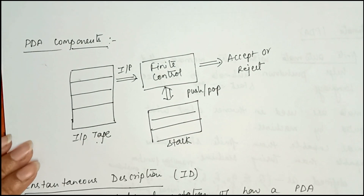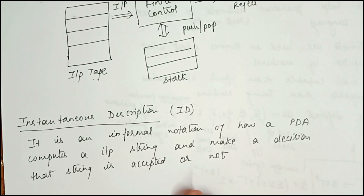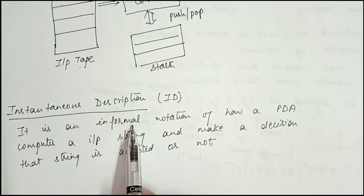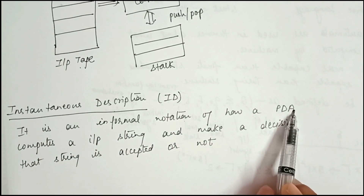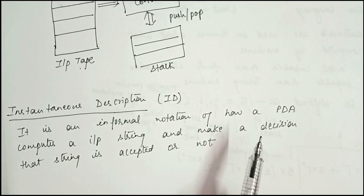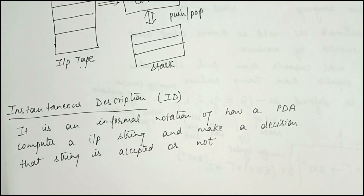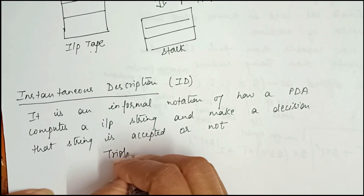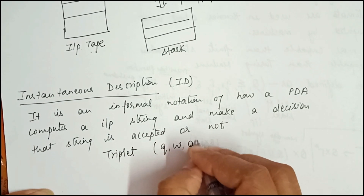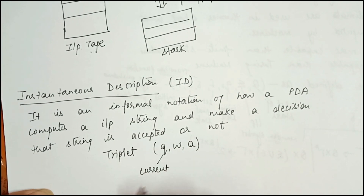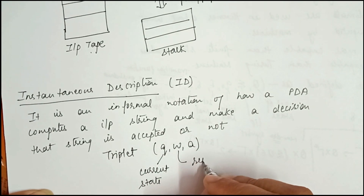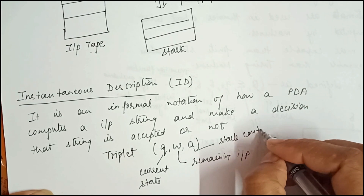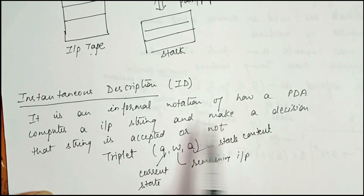One more important point is the Instantaneous Description, or ID. In PDA we use a term called ID — instantaneous description — which is an informal notation of how a PDA computes an input string and makes a decision on whether the string is accepted or not. This instantaneous description is defined by a triplet (q, w, a) where q is the current state, w is the remaining input to be read, and a is the stack content, with the top of the stack at the left.